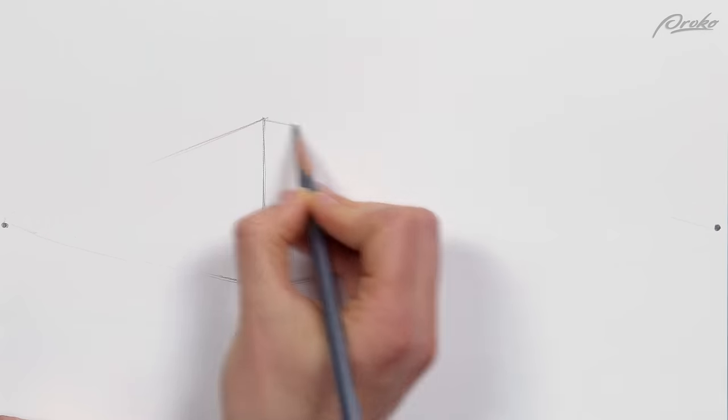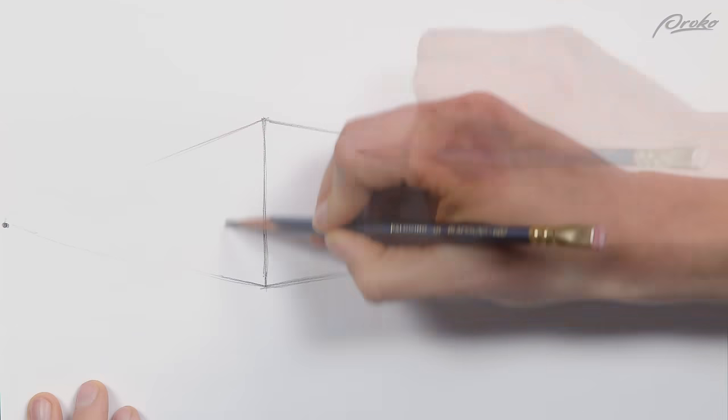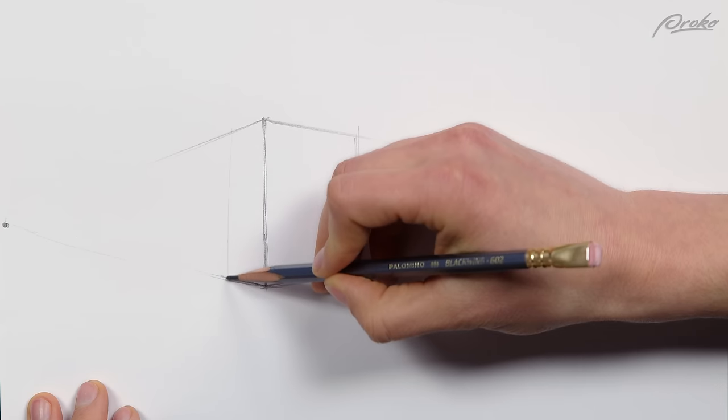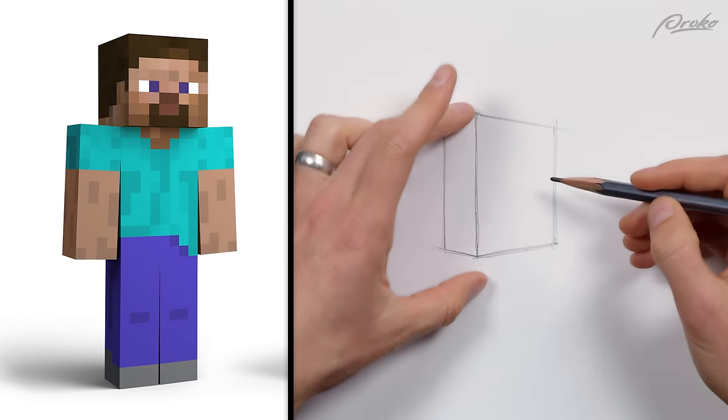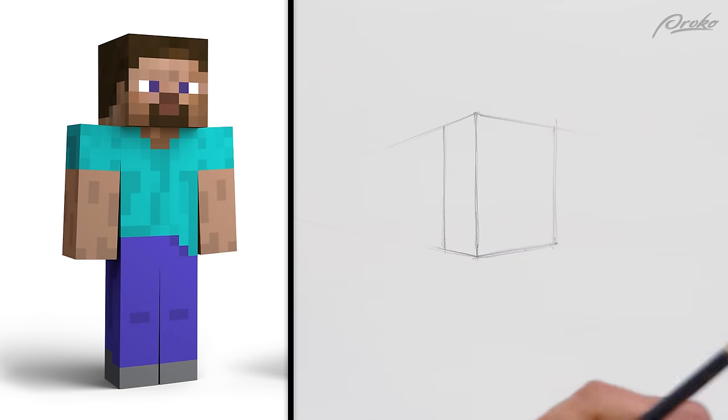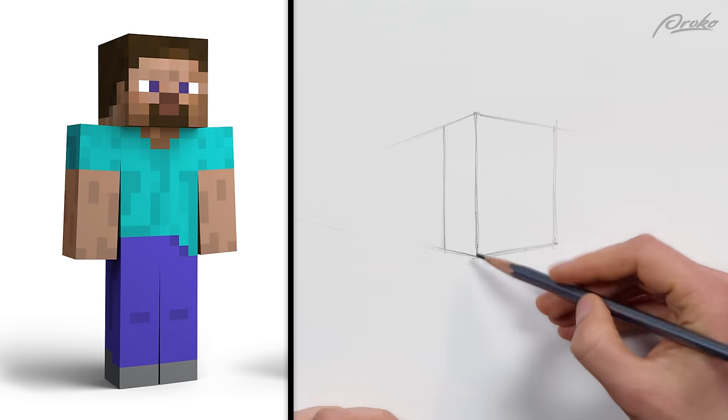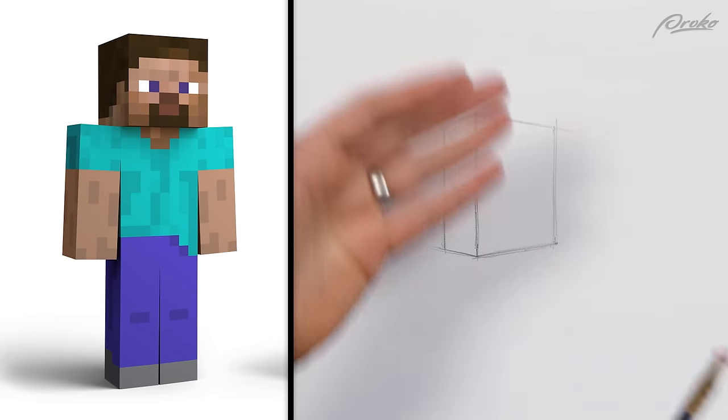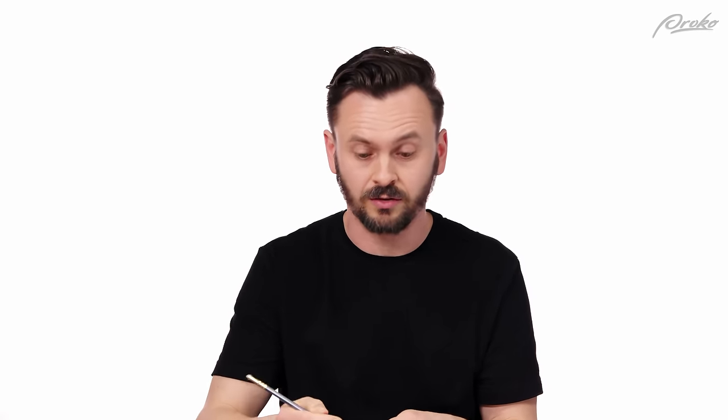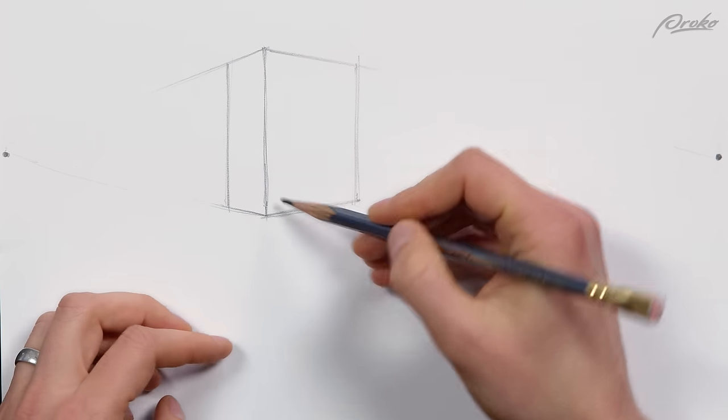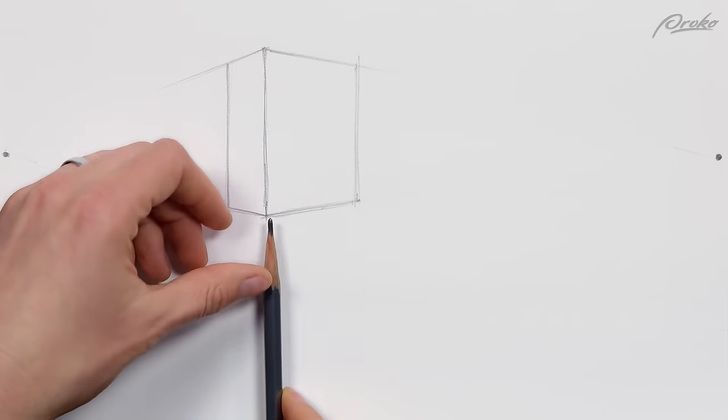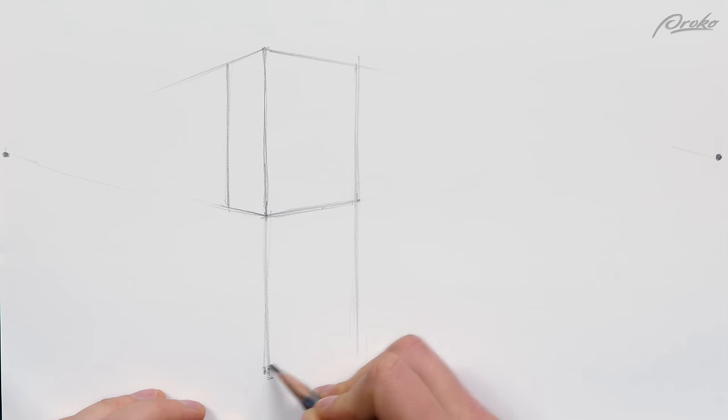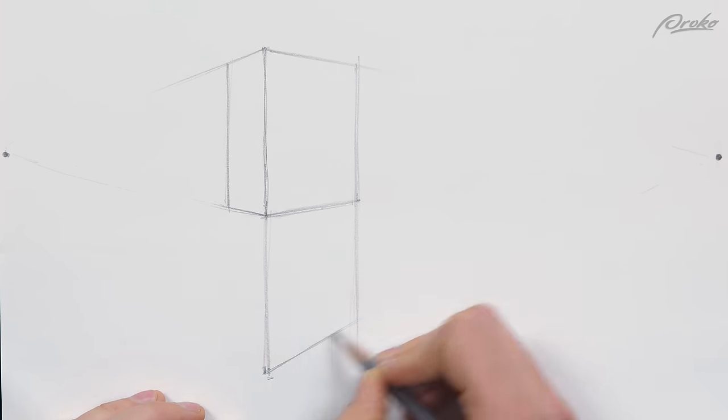I'm gonna speed through this, just eyeballing these lines converging towards the vanishing point. I know that his legs are about twice as tall as his torso. Because this is two-point perspective, the vertical axis is not converging either way, so it's not getting smaller as it goes up or down. To double this distance, I literally just need to take that and double it.